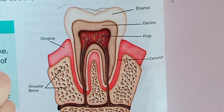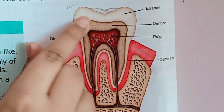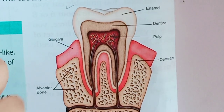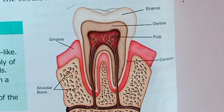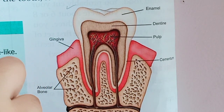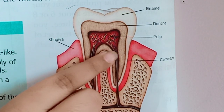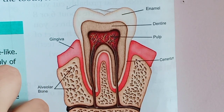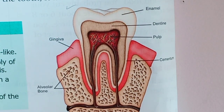Now we are going to learn about the structure of a tooth. There are three layers: enamel, dentine, and pulp. Enamel is the outer white covering of a tooth — it protects the tooth from wear and tear and it is the hardest substance in the body. Dentine is found below the enamel; it is hard and bone-like but softer than enamel. Pulp is the central part of the tooth — it is soft and has a supply of nerves and blood vessels.